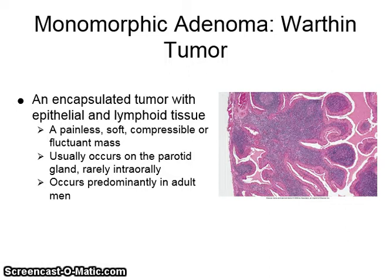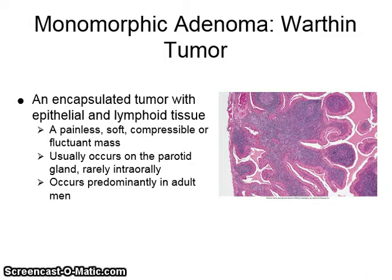The Warthin tumor is a type of monomorphic adenoma — an encapsulated tumor with epithelial and lymphoid tissue. It is a painless, soft, compressible, or fluctuant mass. It usually occurs on the parotid gland but rarely intra-orally, and it occurs predominantly in adult men.